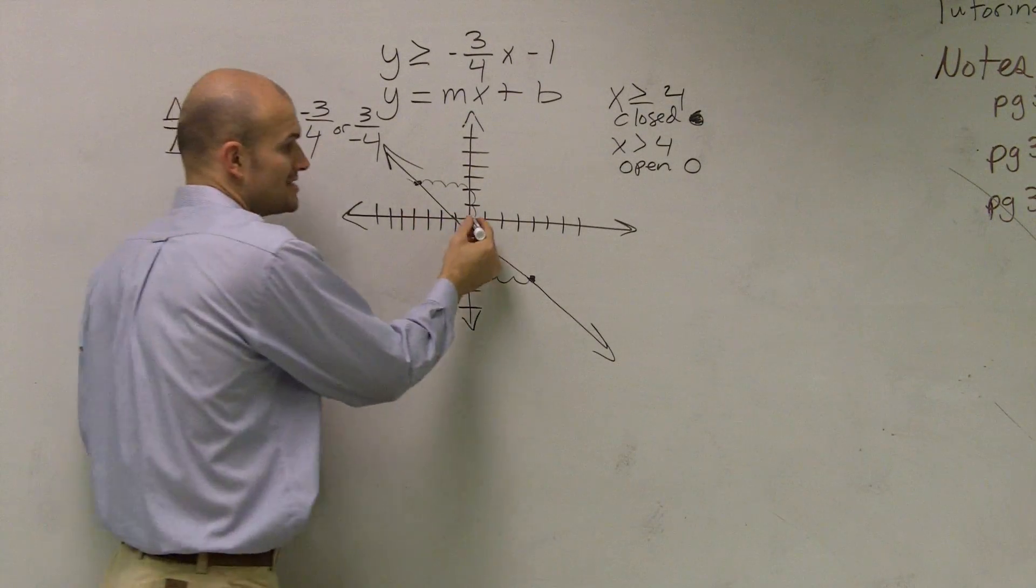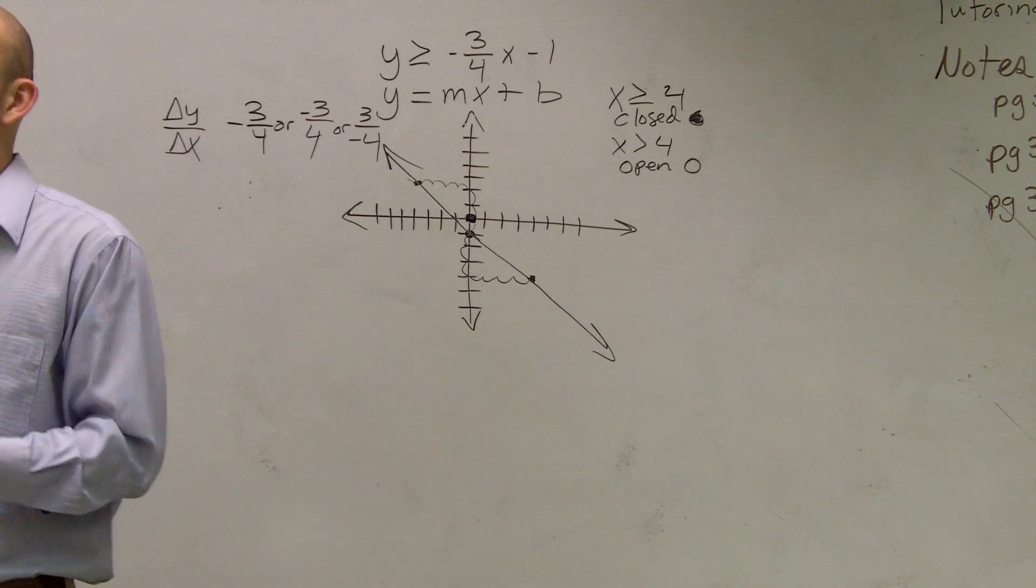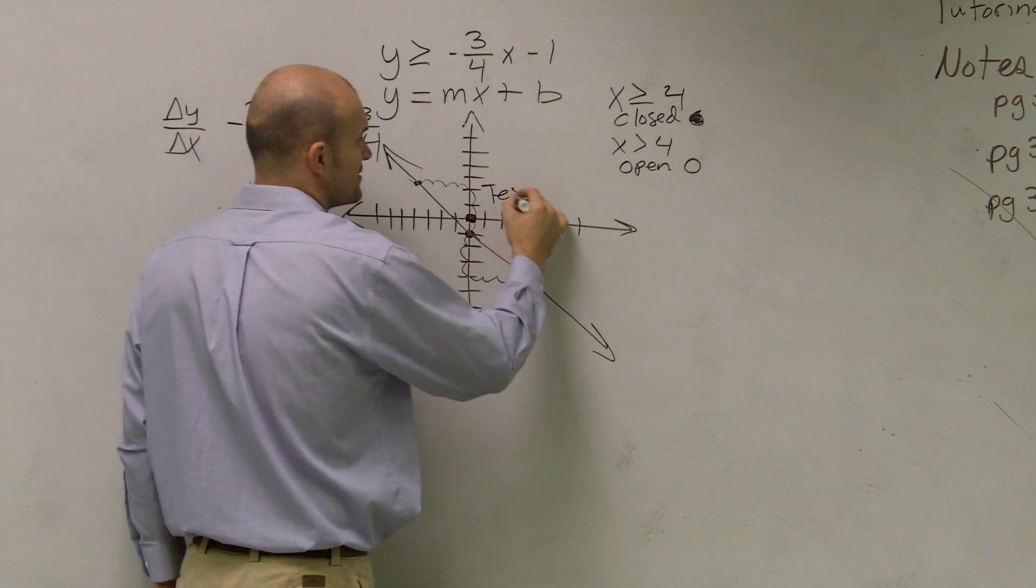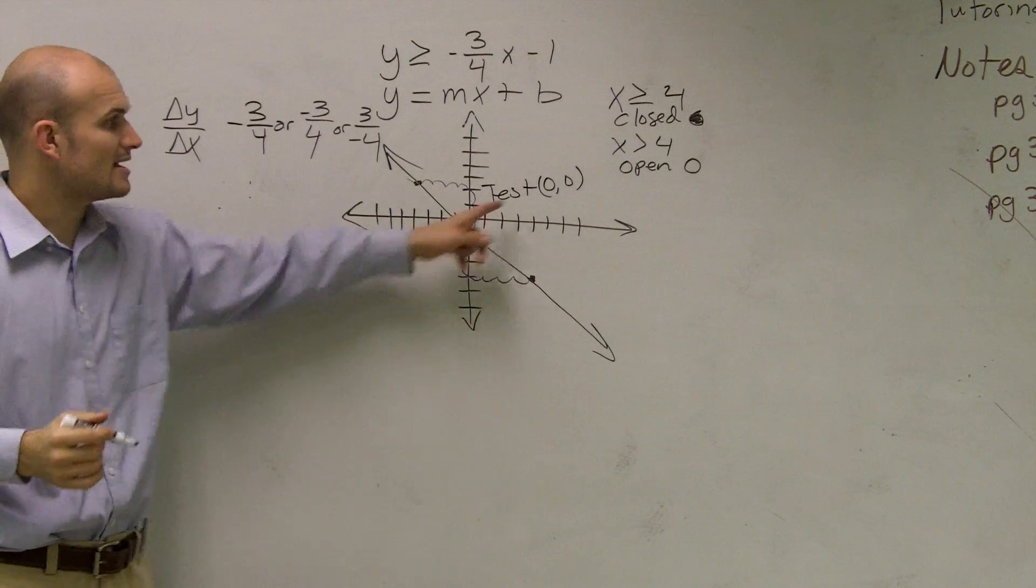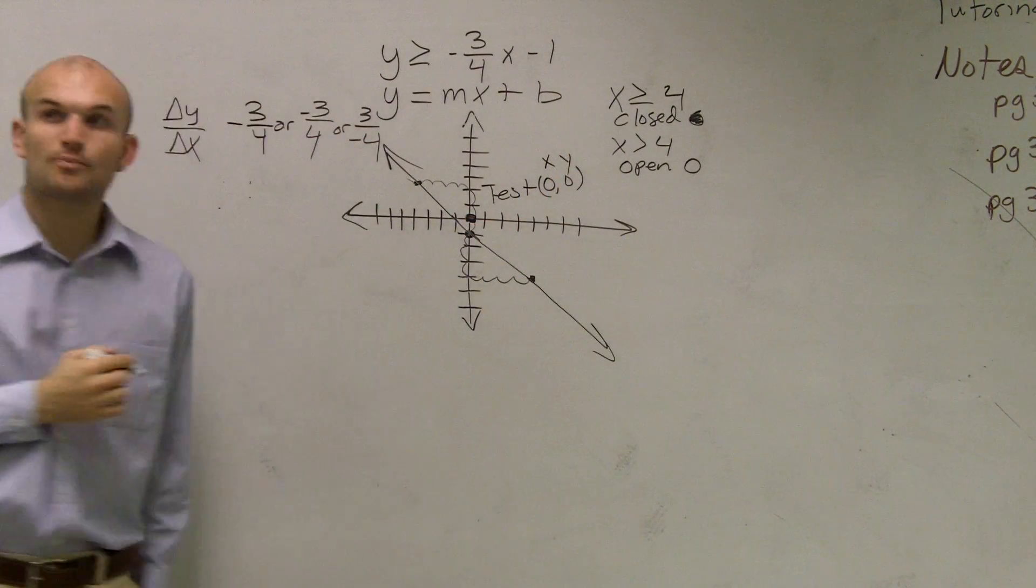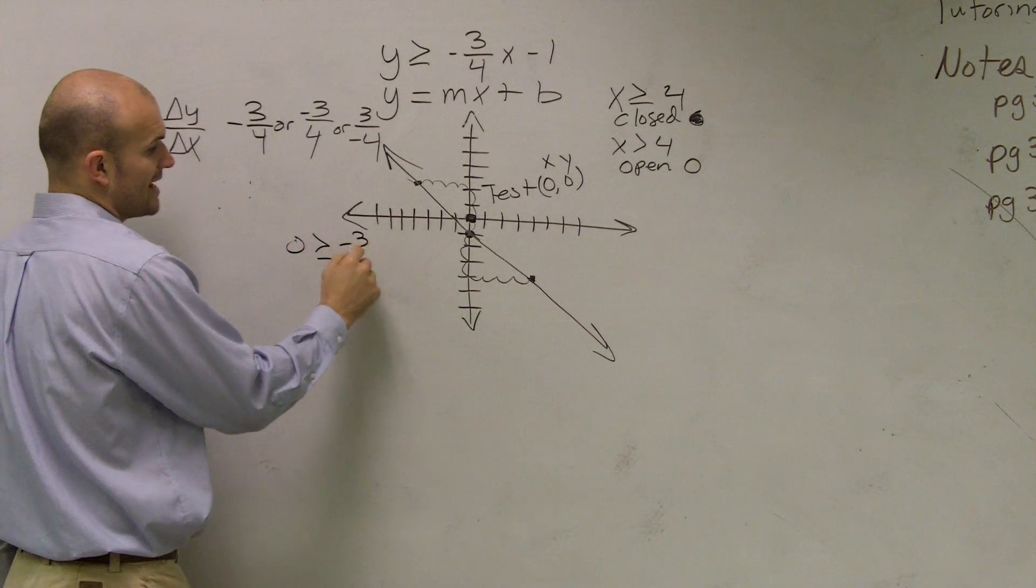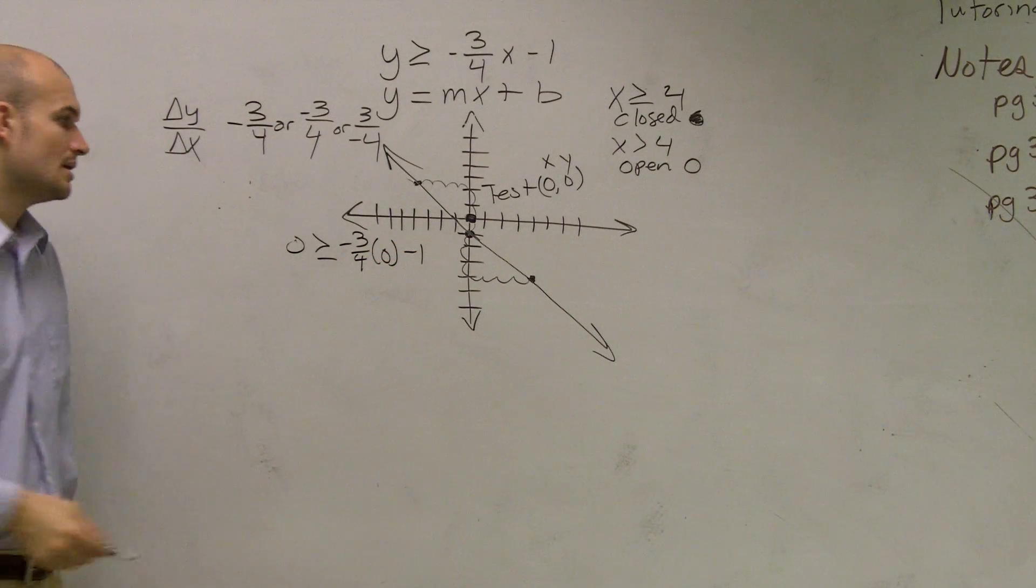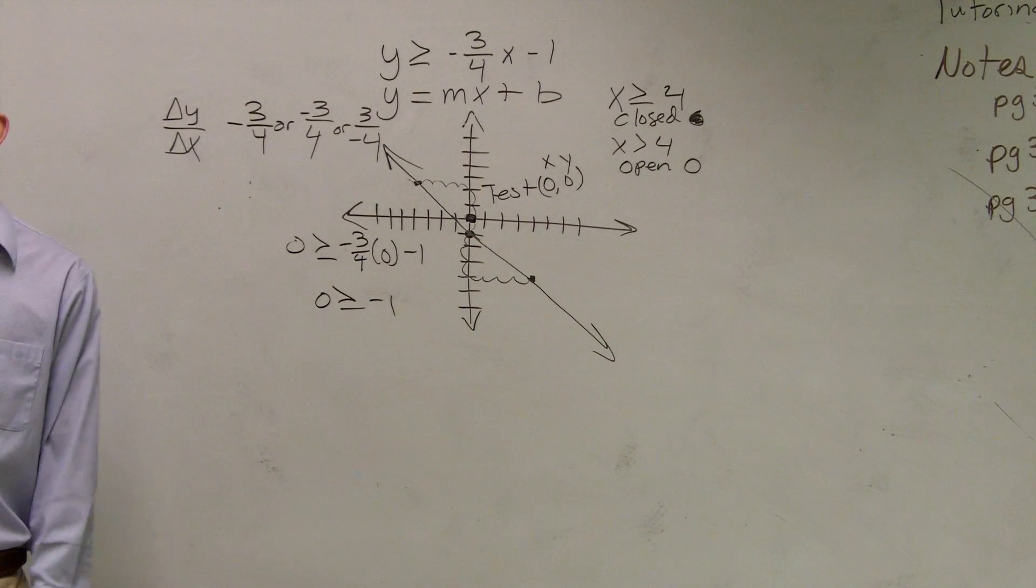So I need to figure out a test point. Well, our test point is going to be 0, 0. And the best time not to use 0, 0 is if your graph goes through 0, 0. So if I were to test 0, 0, what I need to do is remember a coordinate has an x and y coordinate. So you can plug your points in for x and y. So I put 0 is greater than or equal to negative 3/4 times 0 minus 1. Well, 0 is greater than or equal to negative 1. Is 0 greater than or equal to negative 1?